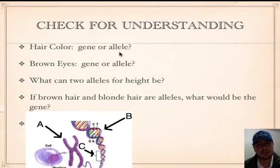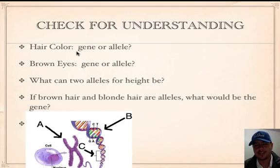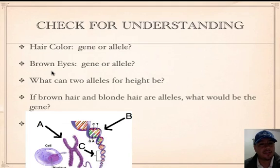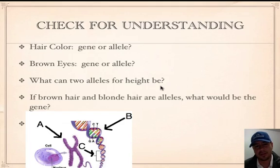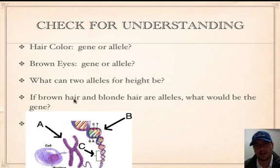For hair color — is that a gene or allele? That's a gene, because we're being general; we didn't say brown hair or blonde hair, we just said hair color. Now brown eyes — is that a gene or allele? Brown eyes is very specific, telling you what eye color it is, so that's an allele. What can two alleles for height be? Alleles means versions of a gene, so two forms of height could be tall and short. If brown hair and blonde hair are alleles, what would be the gene? They're talking about hair color — so that would be the gene.